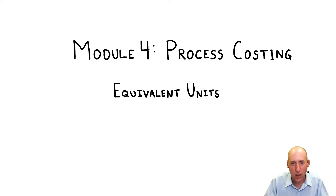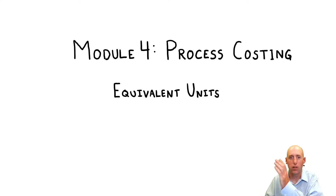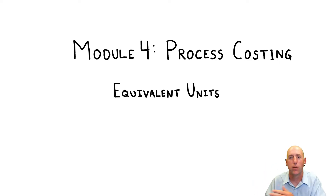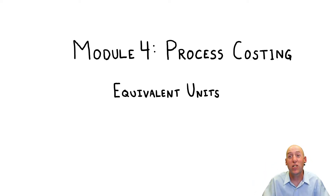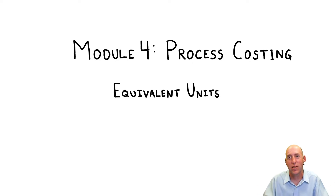So with process costing, you can be a lot more efficient. With job order costing, every single job is a one-off. Process costing lets you be more efficient. And we're going to learn how to prepare something called a production report, which is a table that tracks these costs.